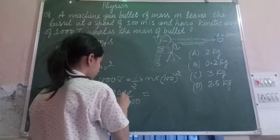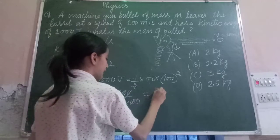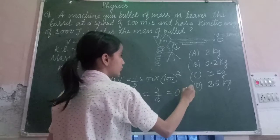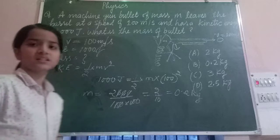After cutting these zeros, we will get 2 upon 100, which is equal to 0.2 kg, as the unit of mass is kg.